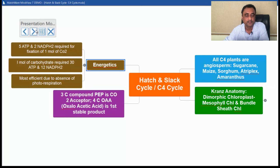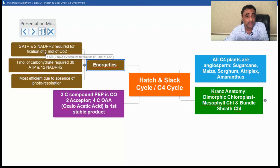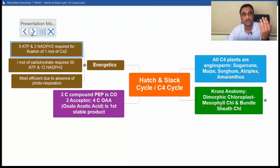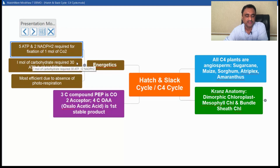Now let us talk about the energetics. Here, 5 ATP and 2 NADPH2 are required for the fixation of one molecule of CO2. The 5 ATP comes from 3 ATP required in the Calvin cycle plus 2 ATP required in the dikinase activity — so 3 plus 2 makes 5. The NADPH2 requirement remains the same as in the Calvin cycle: 2 NADPH2. For one molecule of carbohydrate, altogether 30 ATP and 12 NADPH2 are required.